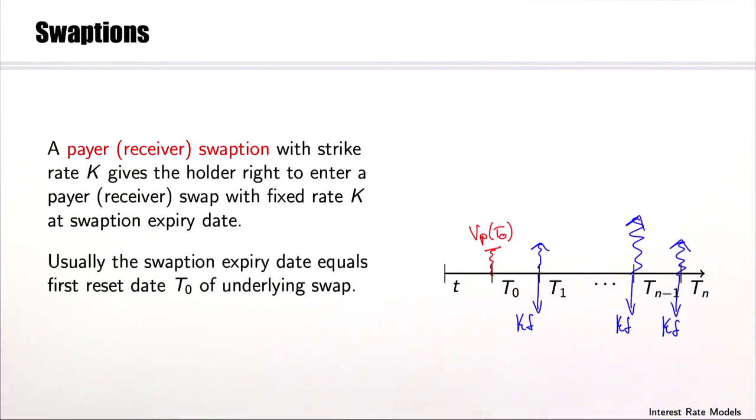A payer swaption with strike rate K gives the holder the right to enter a payer swap with fixed rate K at the swaption expiry date. Usually the swaption expiry date equals the first reset date T0 of the underlying swap.